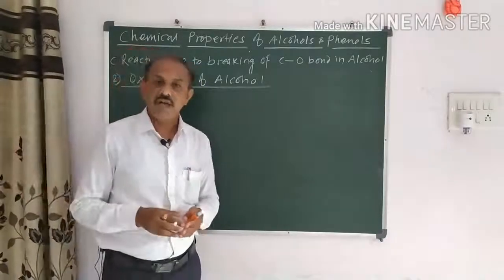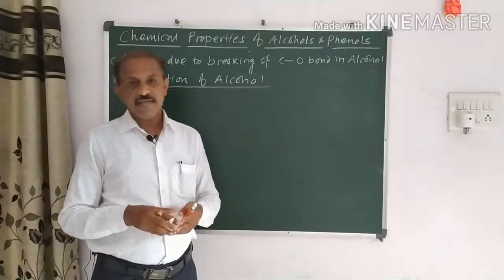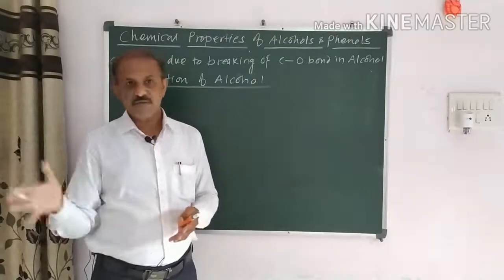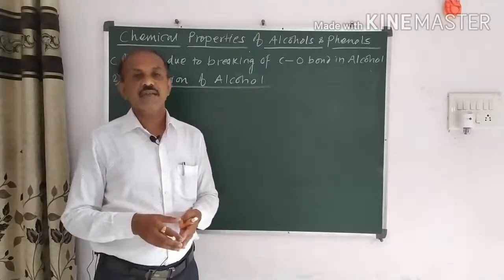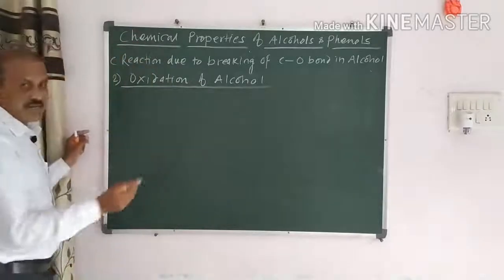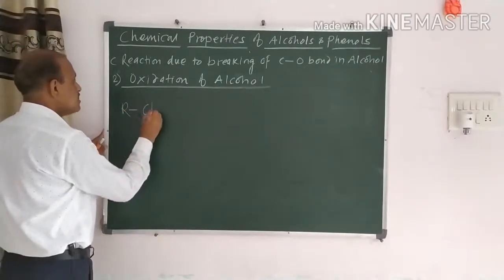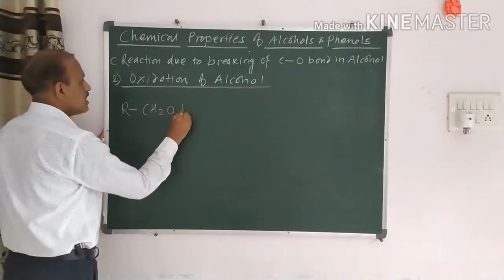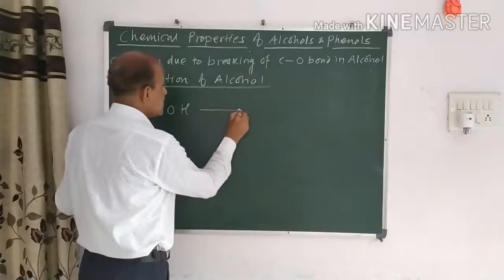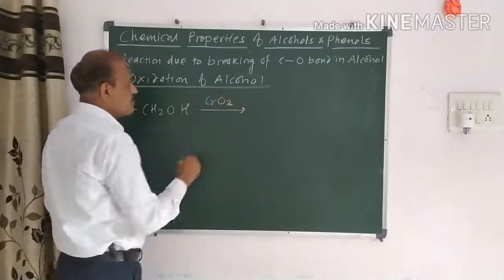In oxidation, there is removal of hydrogen and we get the carbonyl compound. For primary alcohol reacting with an oxidizing agent, dehydrogenation takes place and an aldehyde is formed. The primary alcohol is written as RCH2OH. When it reacts with an oxidizing agent such as CrO3 or PCC, oxidation and dehydrogenation take place.